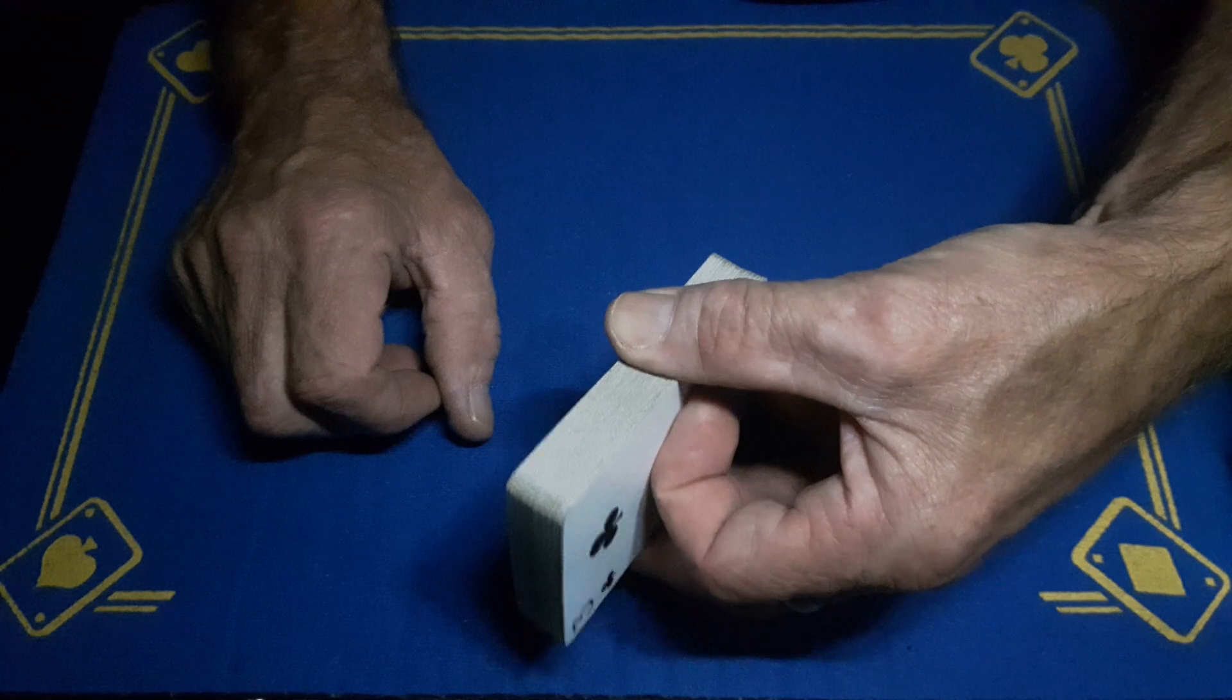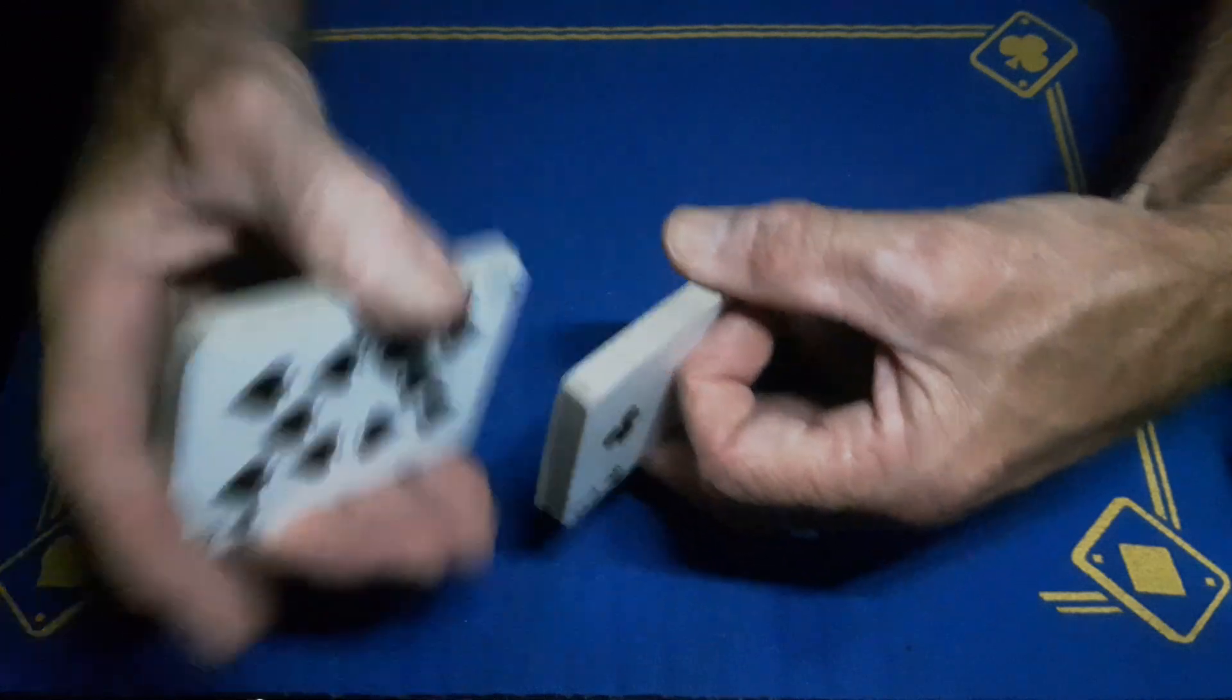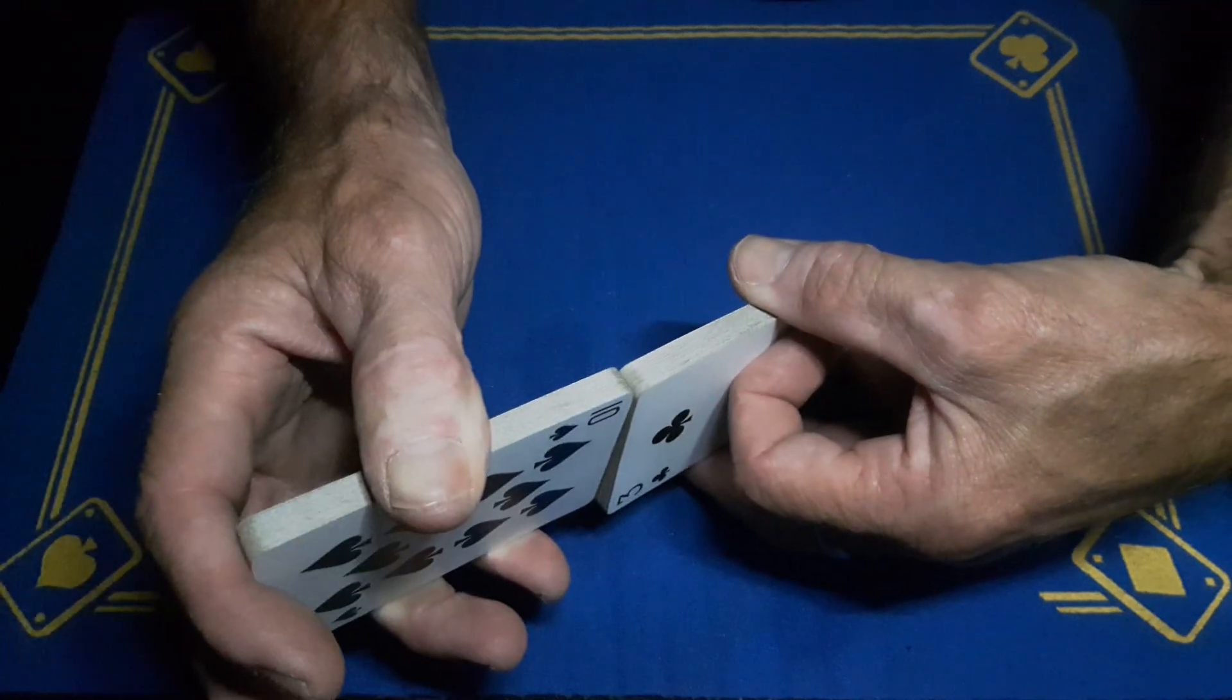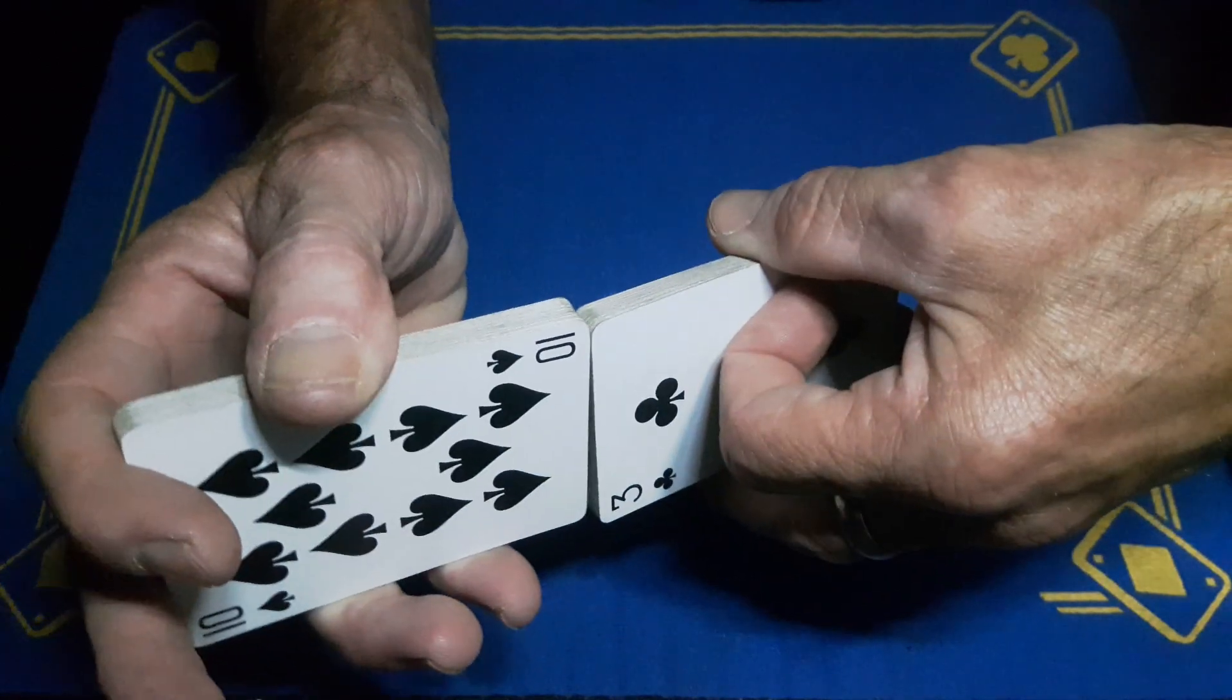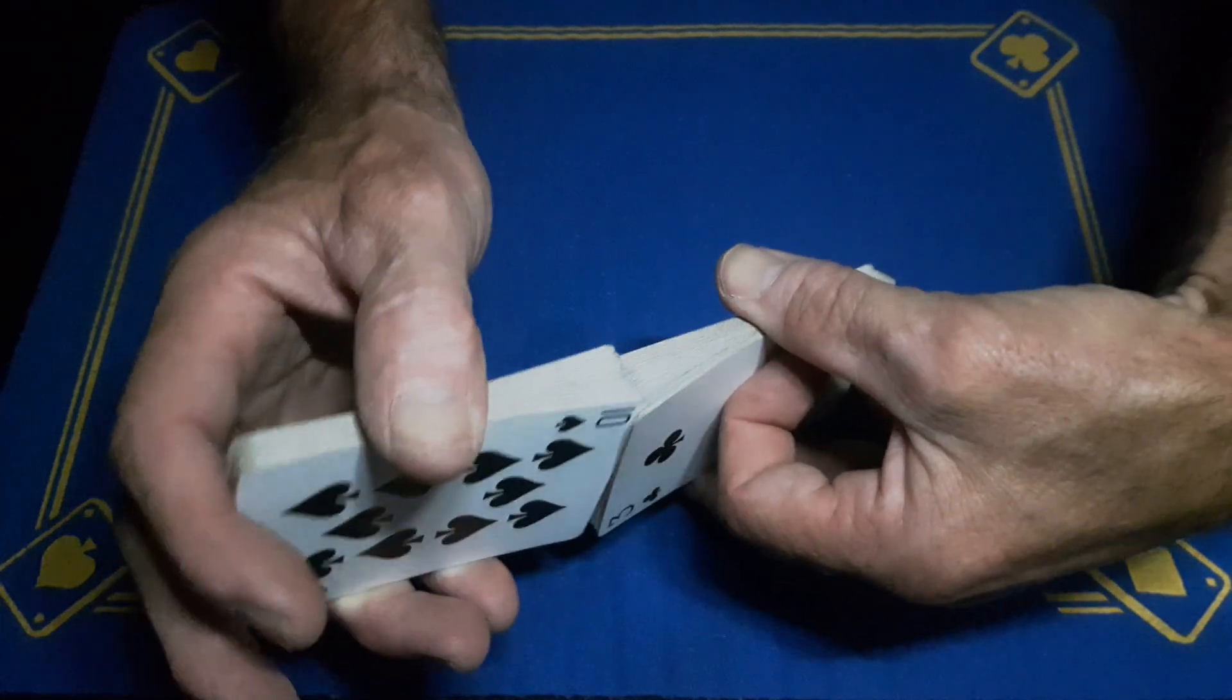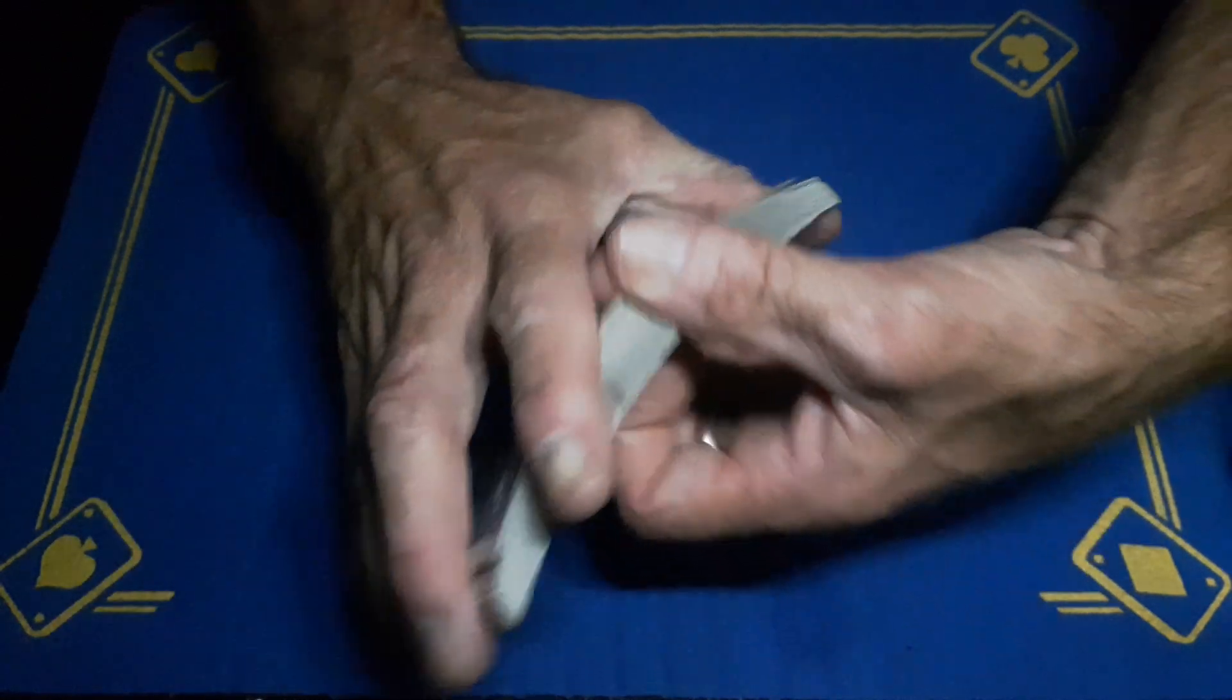Apply pressure with your finger here so this packet is tight, this packet is also tight. You're going to go in, tilt back, tilt this way, a little bit of movement, and they will just merge together.